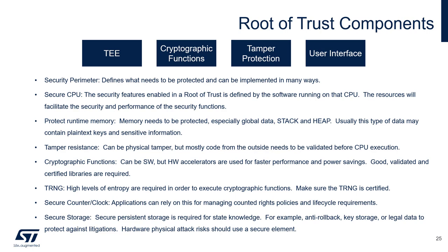Cryptographic functions — these can be software, but hardware accelerators are used for faster performance and power savings. Good, validated, and certified libraries are required. TRNG, or true random number generation: high levels of entropy are required in order to execute cryptographic functions. Make sure the TRNG is certified.